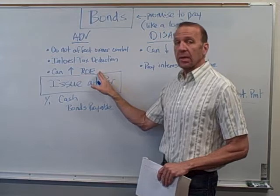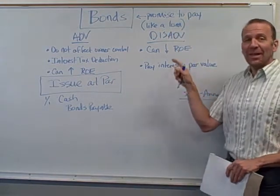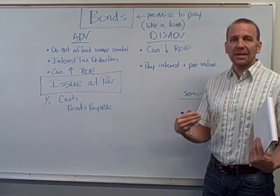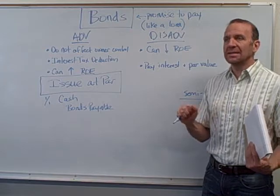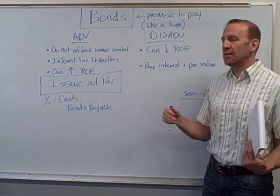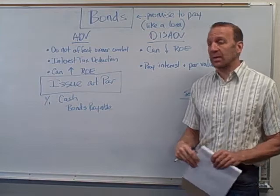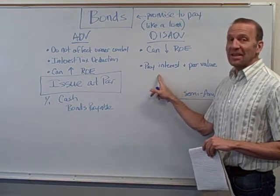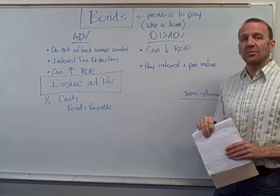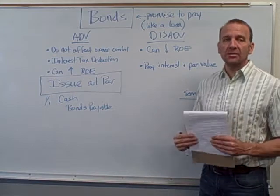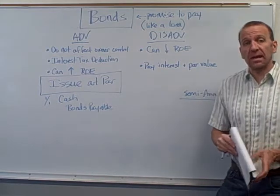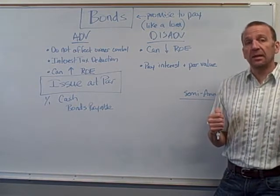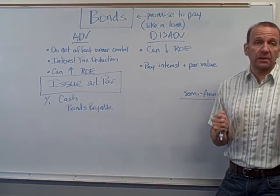A possible disadvantage is that if they get this money and don't use it wisely — if their investment return is less than the current interest rate they're paying — that can actually decrease return on equity. Another disadvantage is that you do have to pay interest, and in the future you have to pay back the par value of the bonds to the bond holders. Common stock doesn't have to be repaid, as it represents ownership in the company.